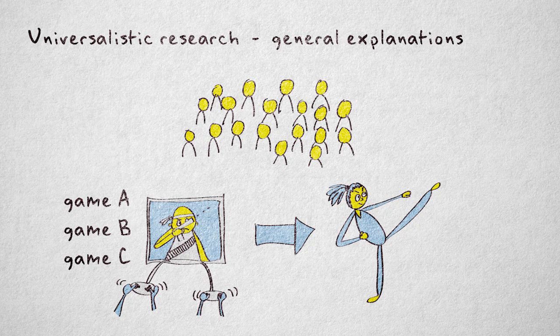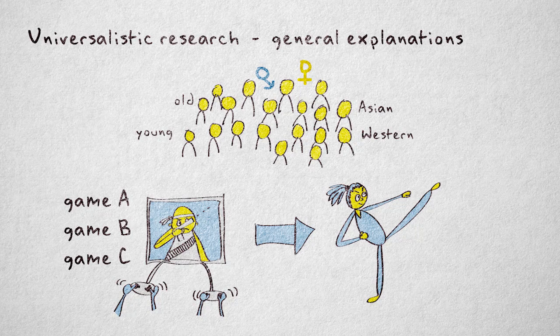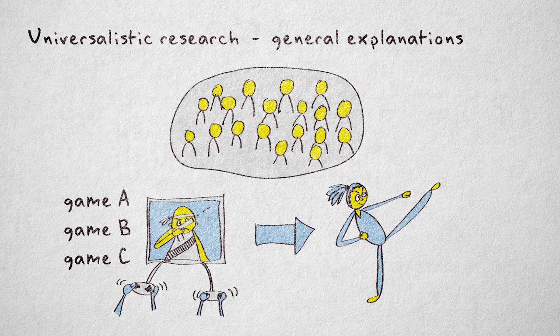We also assume the relation holds for men and women, of any age, in any cultural setting. Universalistic research aims to describe or explain phenomena that apply to all people, or all groups, or societies.